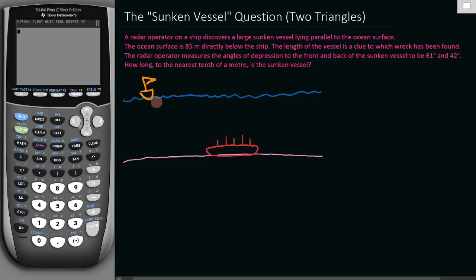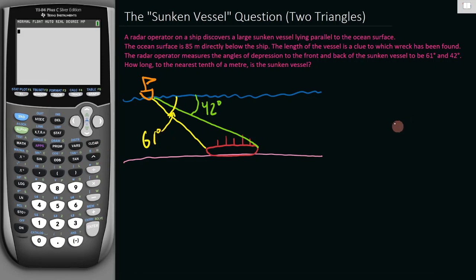Now angle of depression means the angle from the boat going down to the vessel. Let's color code these - one yellow one green. This angle is going to be 42 degrees, and this yellow angle here is going to be 61 degrees. We also know how far the ship is above the ocean floor, which is 85 meters.